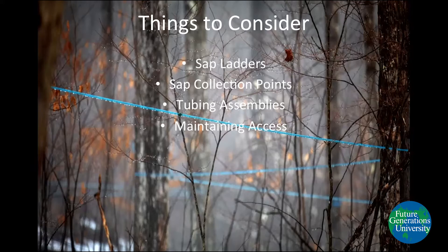The next thing is sap collection points. Both examples only had one collection point, which in theory would either be where you put your sugar shack or somewhere easily accessible like the end of your driveway. But what if you can't have all your tubing run to the same point, or that point is not super accessible? Then you have to start thinking of other solutions, whether that's pumping your sap from that collection point to elsewhere, or maybe having two collection points that you drive a truck between and over to your sugar shack. Both are doable, but something to think about.